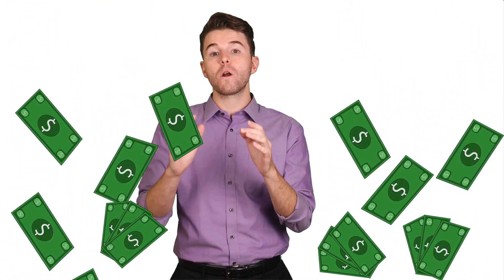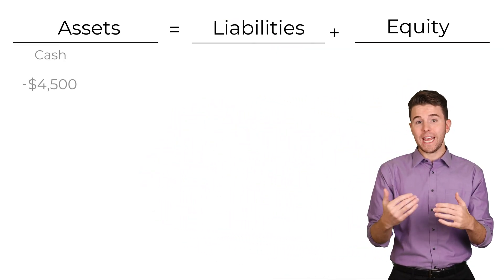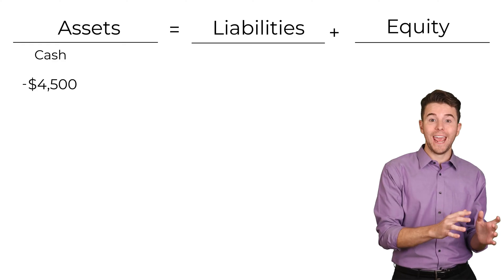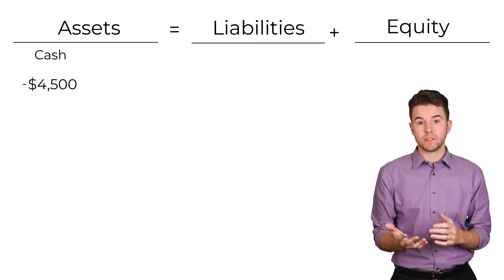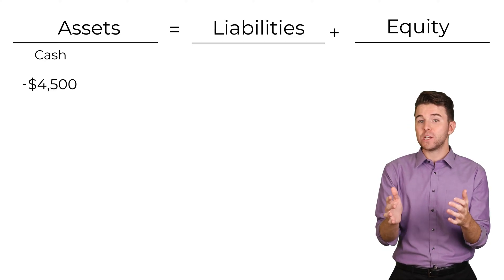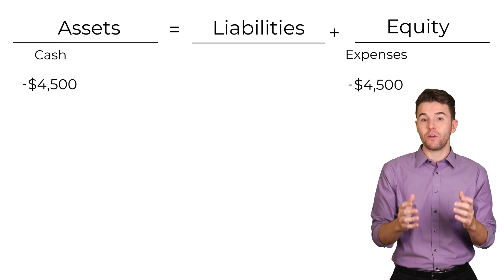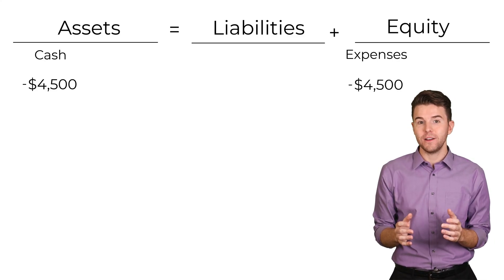Next, we have to pay our employee wages of $4,500. Using the accounting equation, we decrease assets under cash for $4,500 and decrease equity under expenses for $4,500.